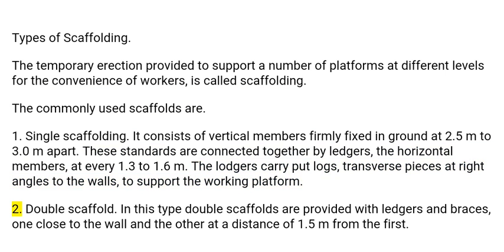2. Double scaffold. In this type, double scaffolds are provided with ledgers and braces, one close to the wall and the other at a distance of 1.5 meters from the first.